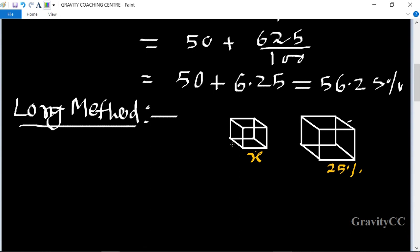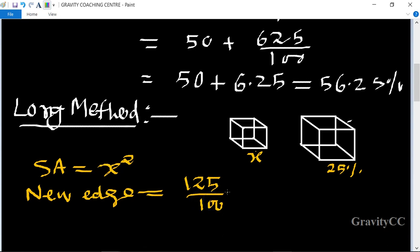Surface area equals 6x². The new edge of the new cube with 25 percent increase means 125/100 × x. Cancel by 25: we get 5x/4. So the new edge is 5x/4.